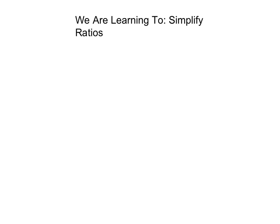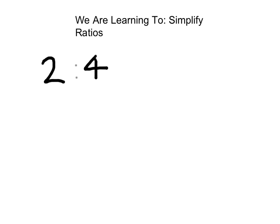Welcome to this tutorial — we're learning to simplify ratios. So what is a ratio? A ratio, for example two to five, is an ordered comparison of quantities or amounts. This ratio might represent that Jessica has two dollars and John has five dollars, so the ratio of Jessica's money to John's money is two to five.